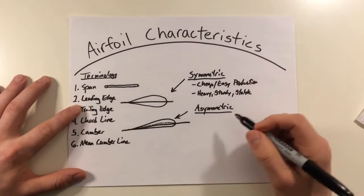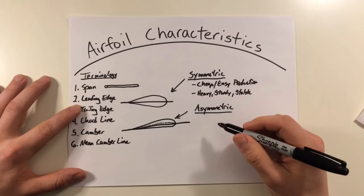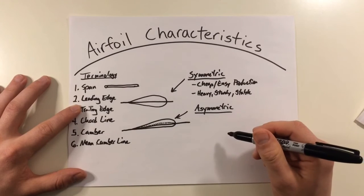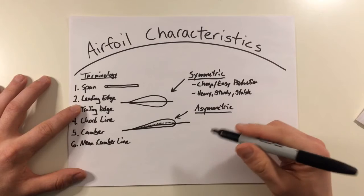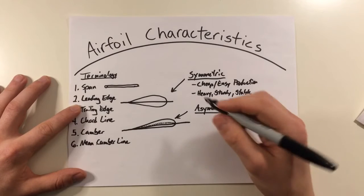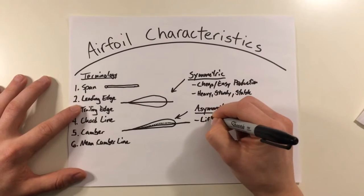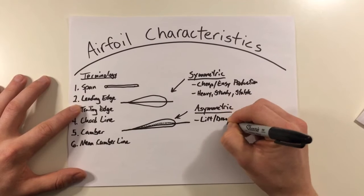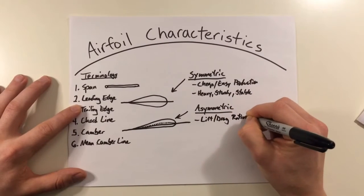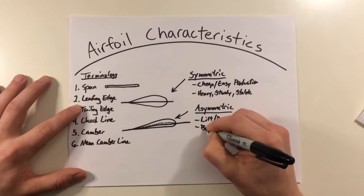But as technology increased, composite materials improved, asymmetric airfoils began showing up. These were able to produce lift even at some negative angles of attack. They had higher lift-to-drag ratios. They had better stall characteristics.